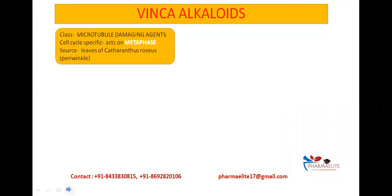The Vinca alkaloids belong to the class of microtubule damaging agents and they are cell cycle specific in nature. They specifically act on the metaphase and their main source is the leaves of Catharanthus roseus plant, which is also known as periwinkle.